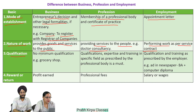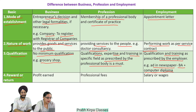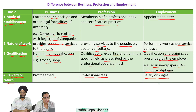Third, qualification: to set up a business, no minimum qualification is required, for example a grocery shop. In case of profession, qualifications, expertise, and training in a specific field as prescribed by the professional body is a must. In case of employment, qualification and training are prescribed by the employer — for example, an ad in a newspaper for the post of assistant requiring BA plus computer diploma. Fourth, reward or return: in case of business, profit earned is the return; in case of profession, professional fees are charged from clients; in case of employment, salary or wages are given to employees.